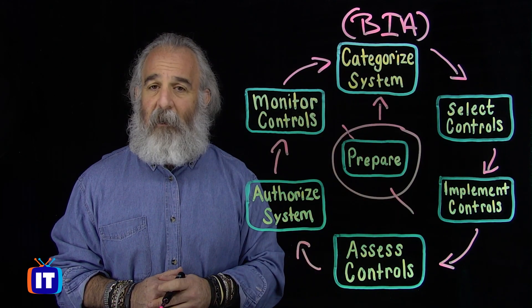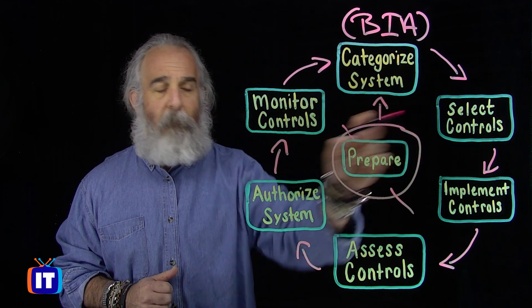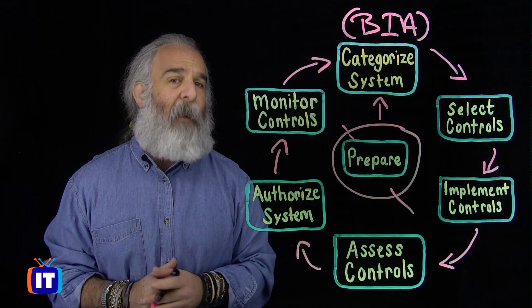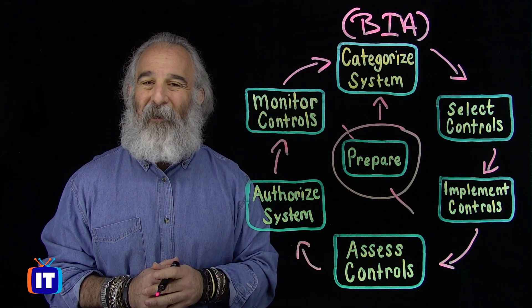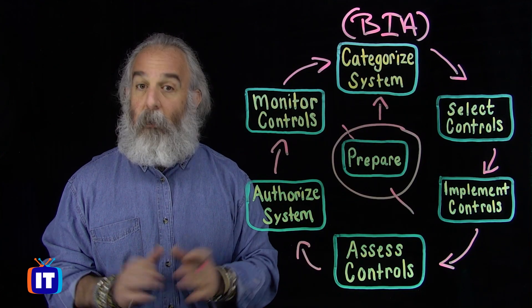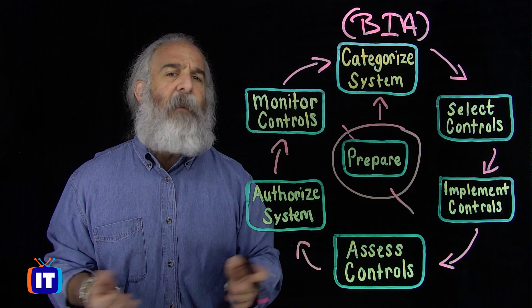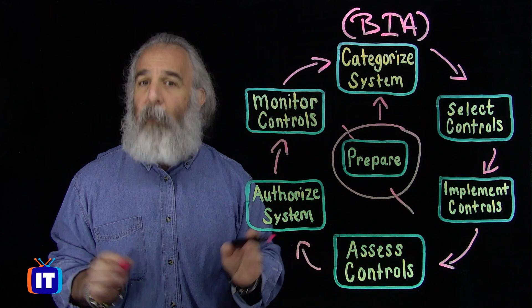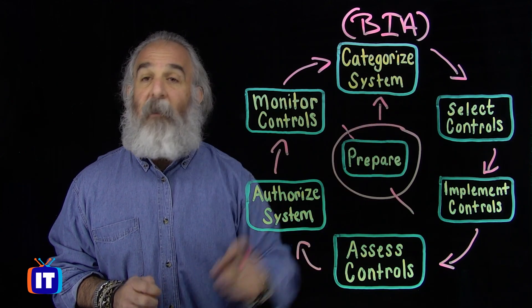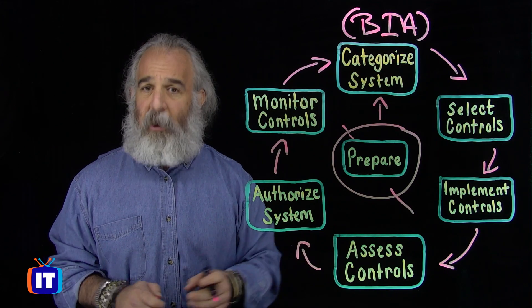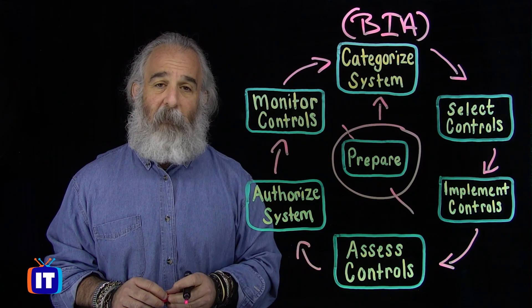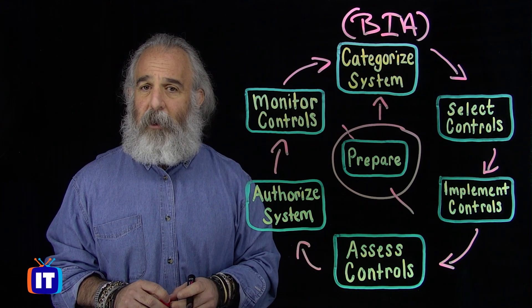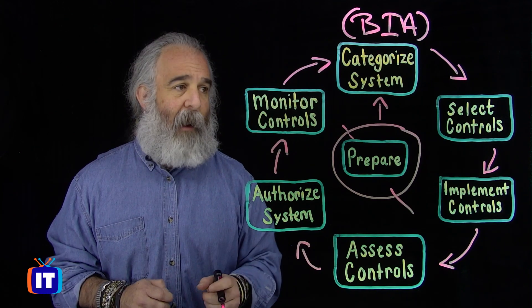From there, we're going to move into selecting controls. The output of the BIA should be our ability to zero in on these systems, understand them, put them into the context of the operational environment, see how important they are, and then apply the appropriate control or controls. Remember, controls are also synonymous with terms like countermeasures and safeguards on the exam. We're going to select both control categories and types — think about the three categories: administrative, technical/logical, and physical — and the seven different types of controls we can choose from.